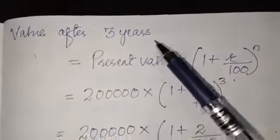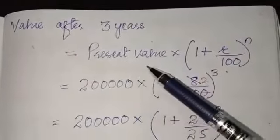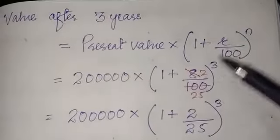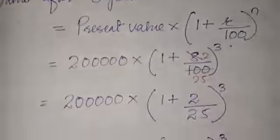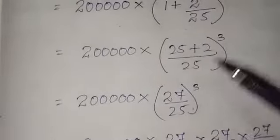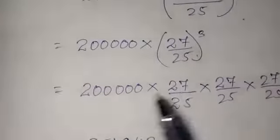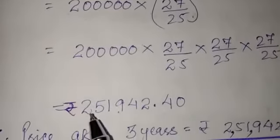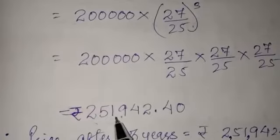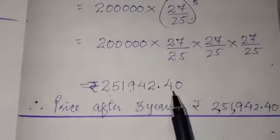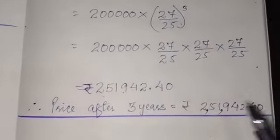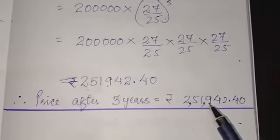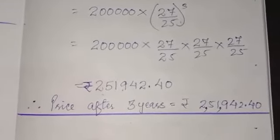The formula is present value into 1 plus r by 100 to the power n. Put r as 8, cancel, and simplify to get 27 by 25 cubed. Cancel and divide to get 2 lakh 51,942.40. So the cost of that flat after three years will be rupees 2 lakh 51,942.40.